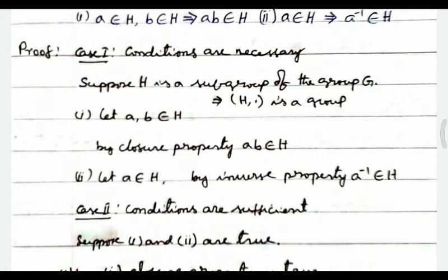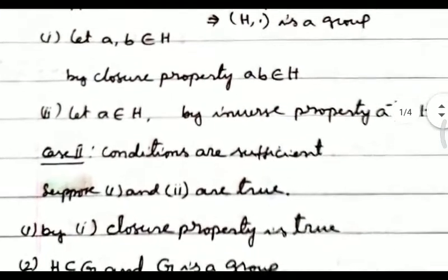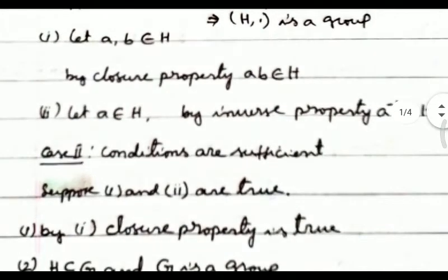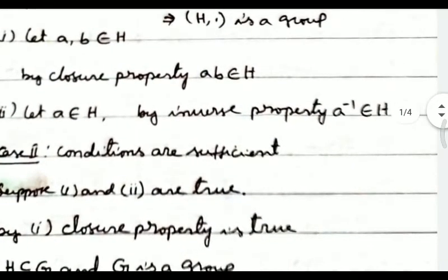To prove condition one: let a, b belong to H. By closure property, ab belongs to H. That proves condition one. For condition two: let a belong to H. By inverse property, a inverse belongs to H.